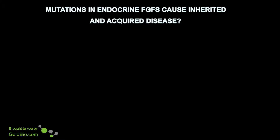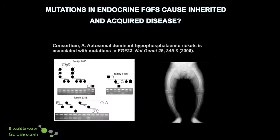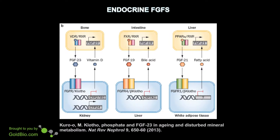Mutations in endocrine FGFs cause inherited and acquired diseases as well. An example is hypophosphatemic rickets, associated with mutations in fibroblast growth factor 23, which leads to abnormal loss of phosphate due to FGF23's action on the kidney, causing weak and bending bones characteristic of rickets. FGF23 is made in bone and signals to the kidney to regulate phosphate homeostasis. FGF19 is made in the intestine and signals to the liver to regulate bile acid production. FGF21 is made in the liver and signals to adipose tissue to regulate fatty acid metabolism.